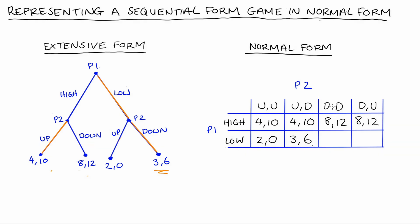If Player 1 plays low and Player 2 plays DD (down if high, down if low), Player 2 responds to low by playing down, so the payoffs are 3, 6. Lastly, if Player 1 plays low and Player 2 plays DU (down if high, up if low), Player 2 responds to low by playing up, so the payoffs are 2, 0.